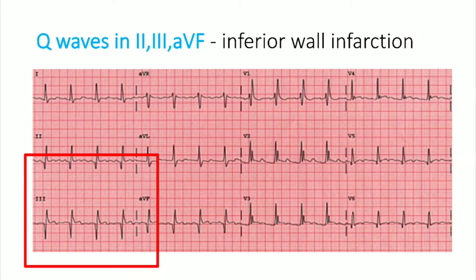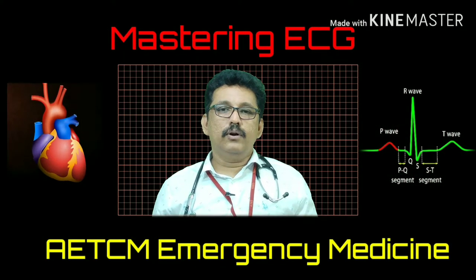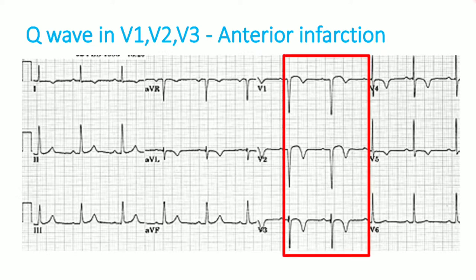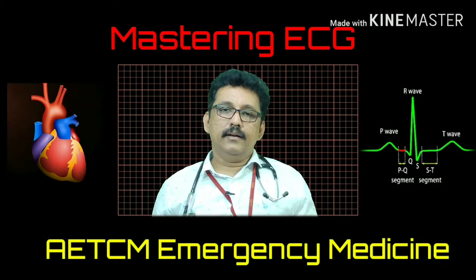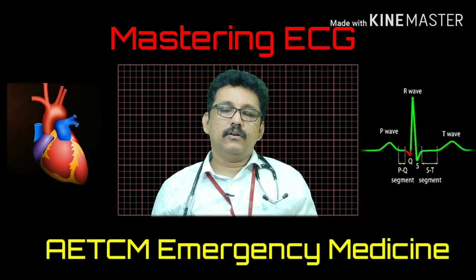On ECG, significant Q waves in leads II, III, and aVF indicate inferior wall involvement — this means old myocardial infarction in the inferior wall. When Q waves are seen in V1, V2, and V3 (anterior leads), this indicates a previous anterior myocardial infarction. A QS pattern with ST elevation indicates a recent MI. The QS pattern means there is no R wave, just a negative deflection.